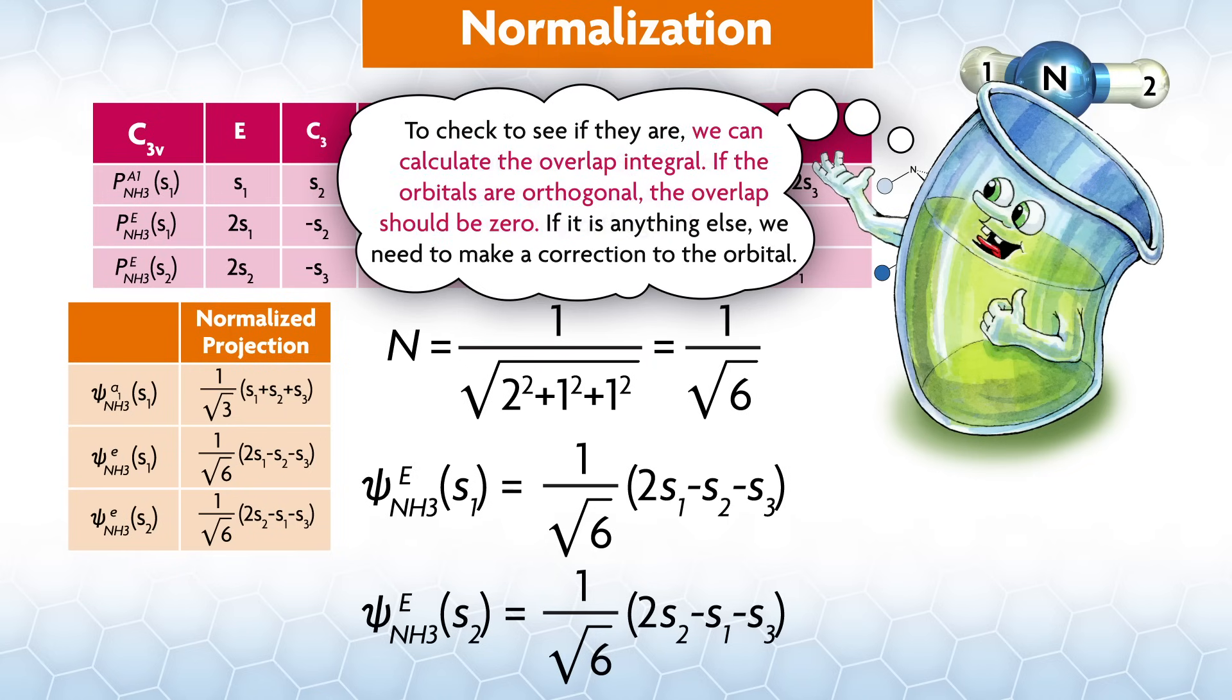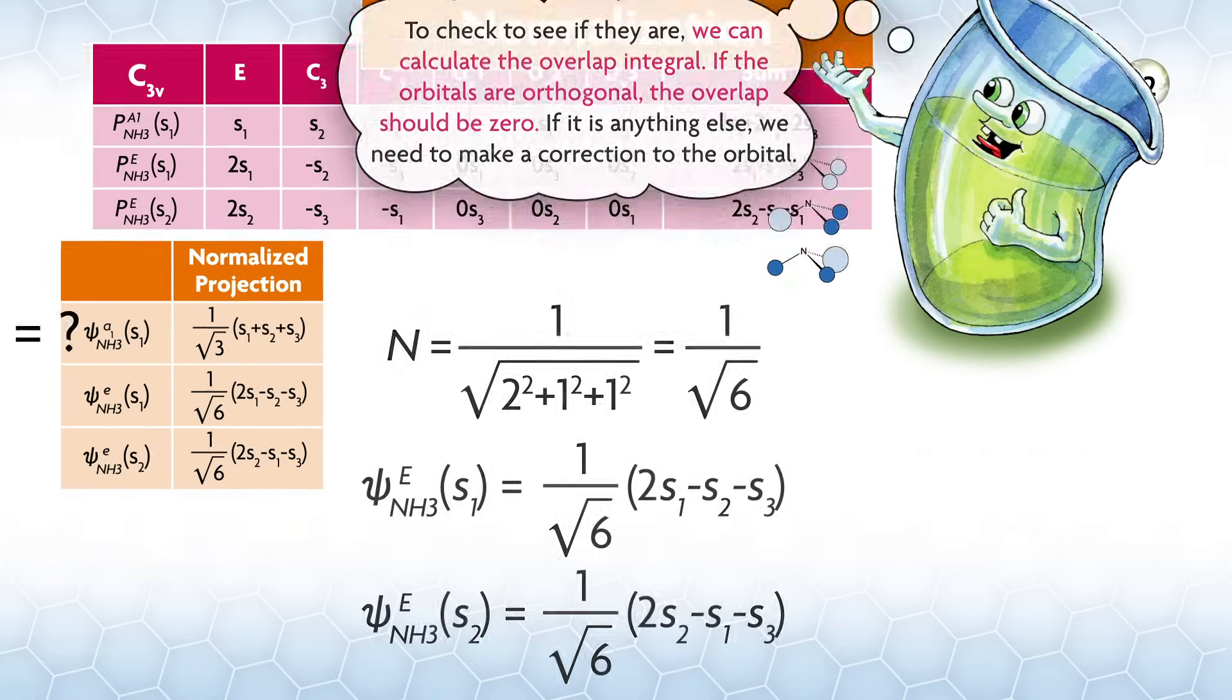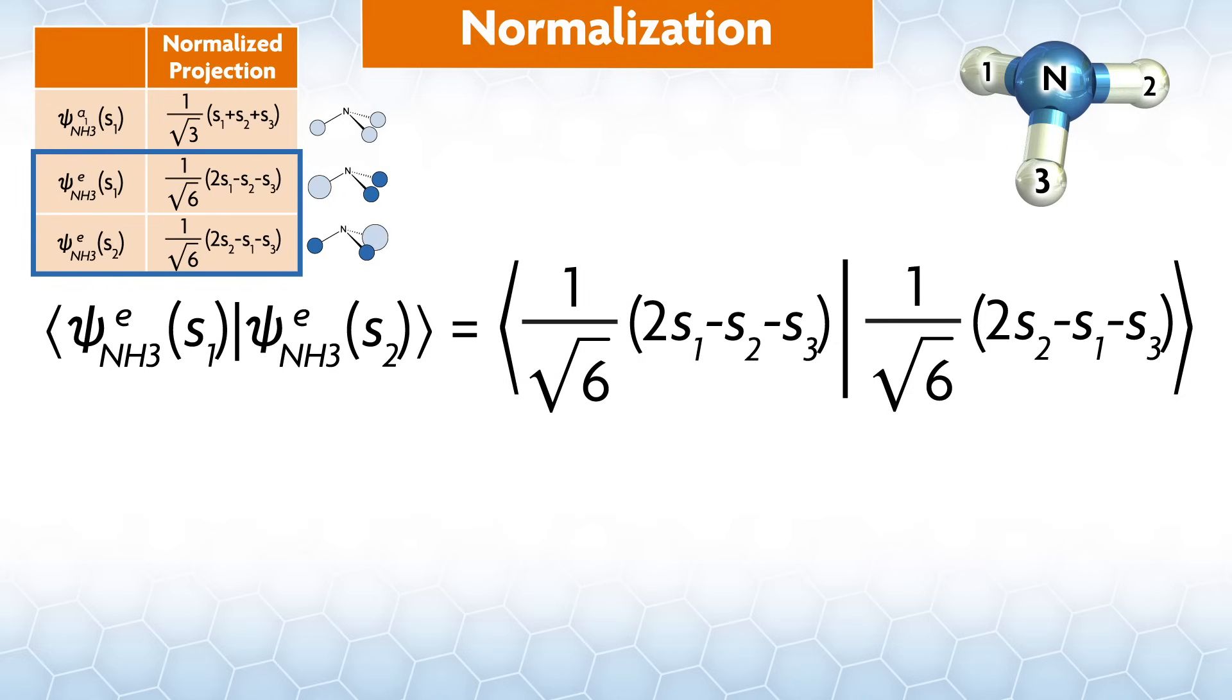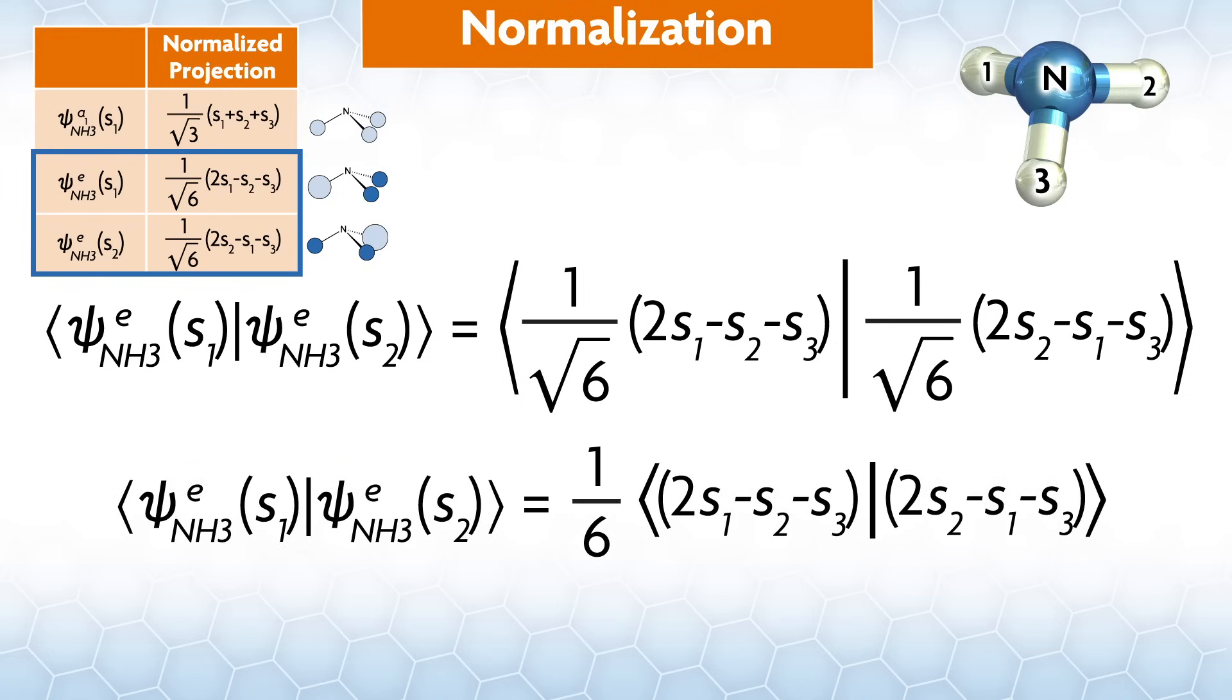To check to see if they are, we can calculate the overlap integral. If the orbitals are orthogonal, the overlap should be zero. If it's anything else, we need to make a correction to the orbital. Here, I'll use Dirac's Braket notation to simplify things, but for our purposes, we can assume everything is real as opposed to imaginary, and then we are just thinking about how much the atomic orbital functions will overlap with one another. An overlap integral in Braket notation is simply this with the two SALCs on either side of the vertical bar. We insert the nature of the wave functions that we found previously. In this case, the normalization constants are identical, so we can pull them out of the integral. 1 over the square root of 6 times itself is 1 sixth. Also, we'll break this into a series of smaller integrals.